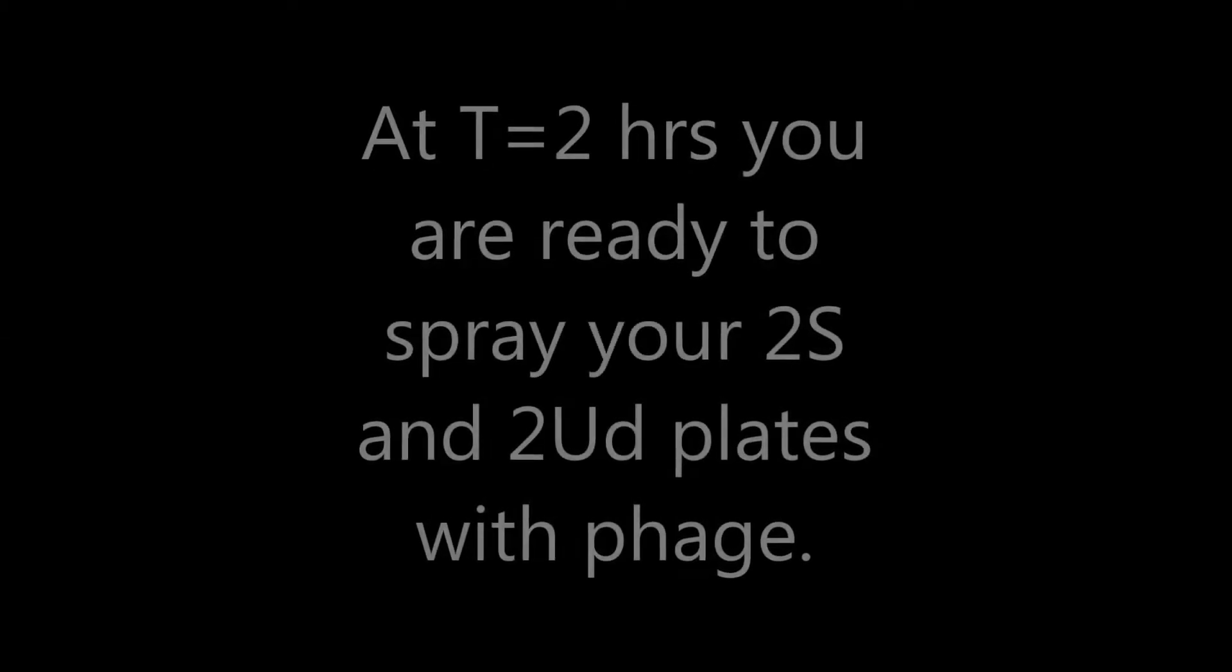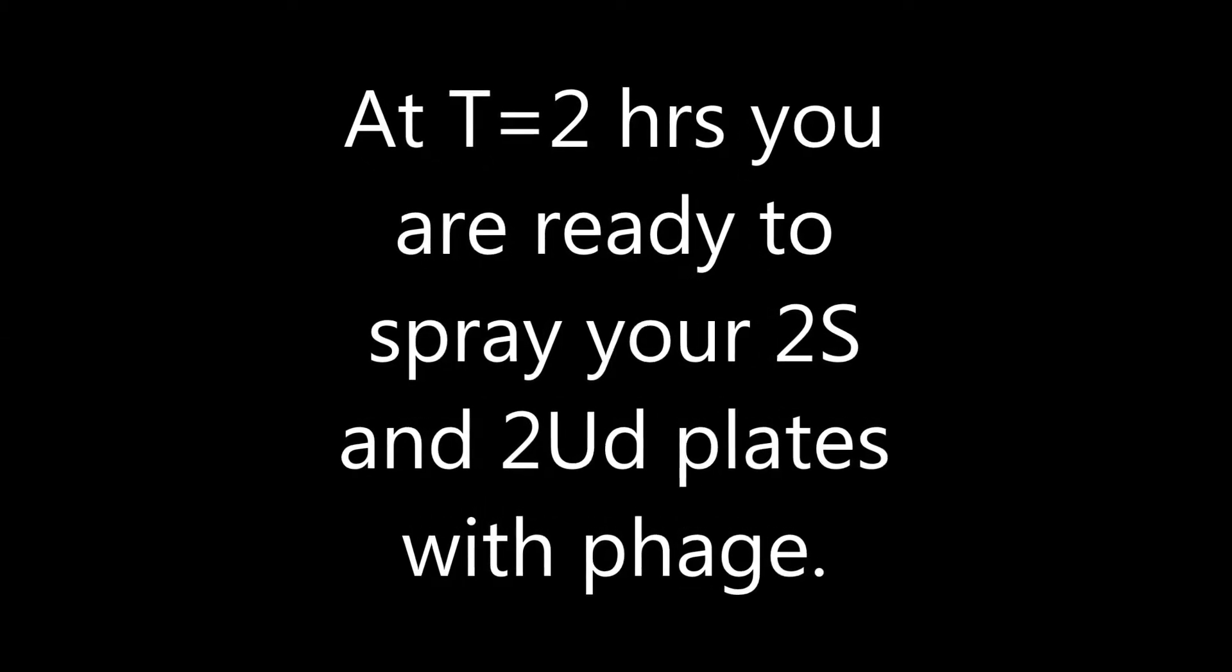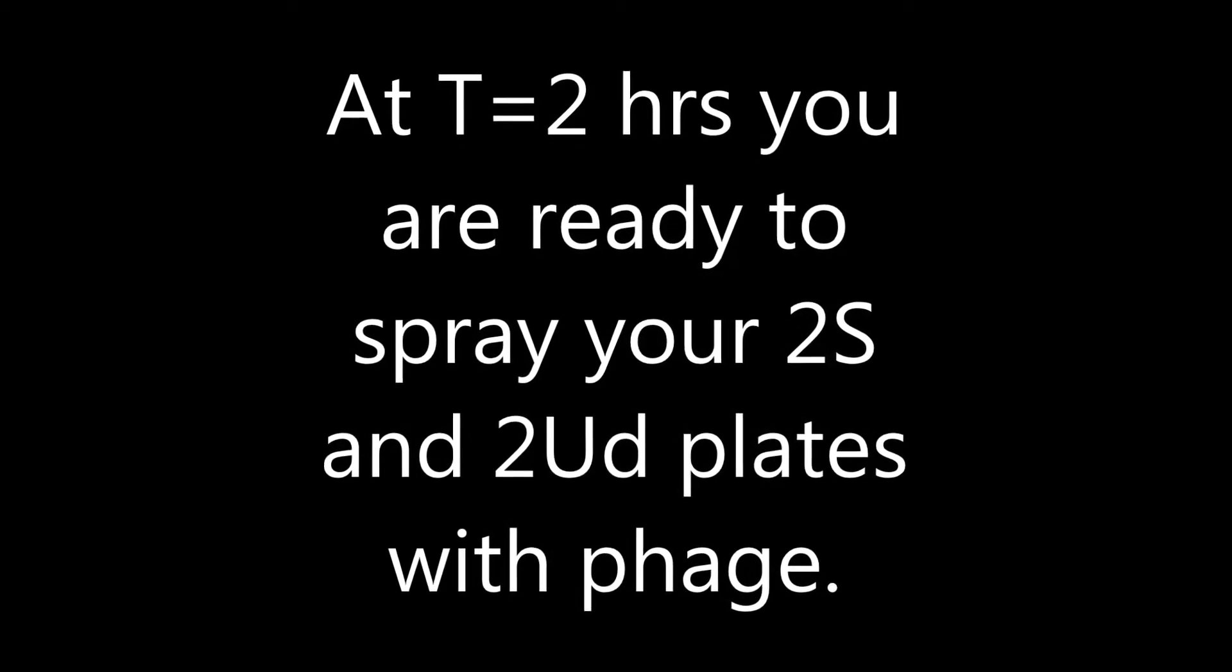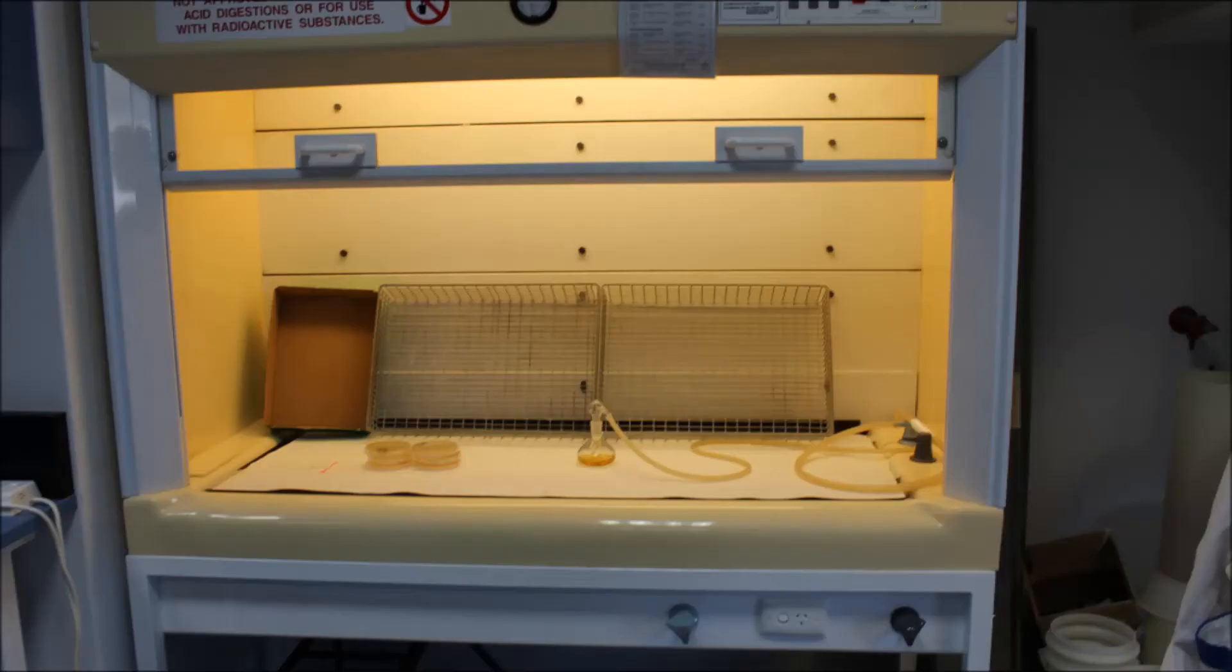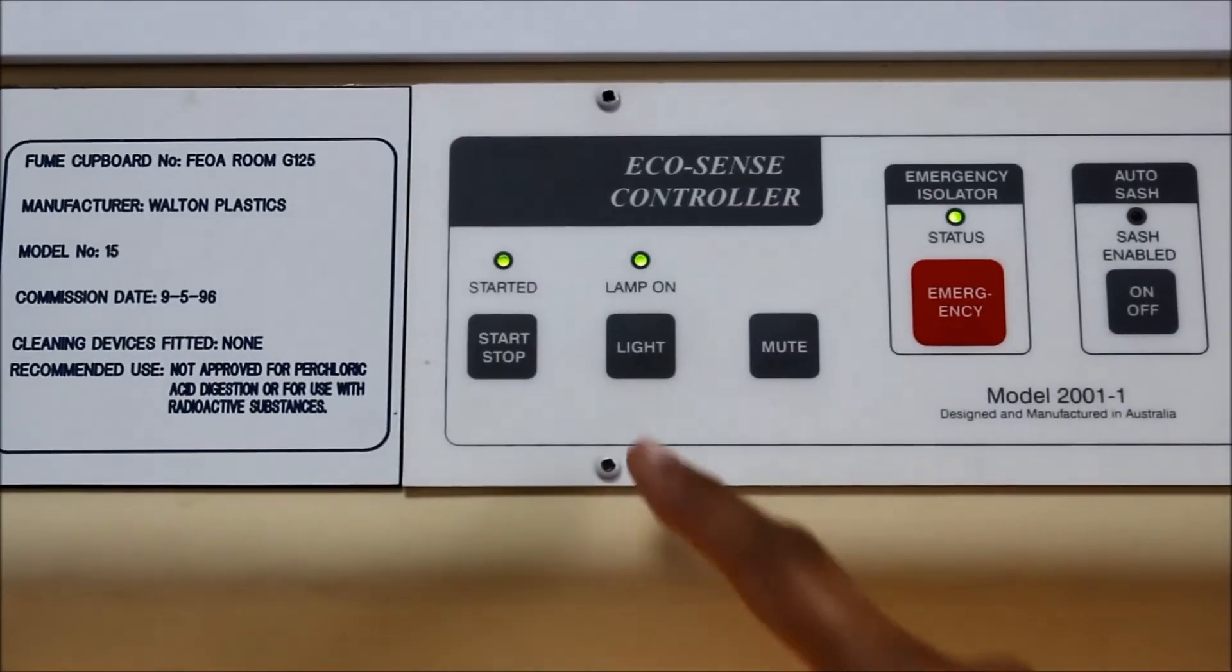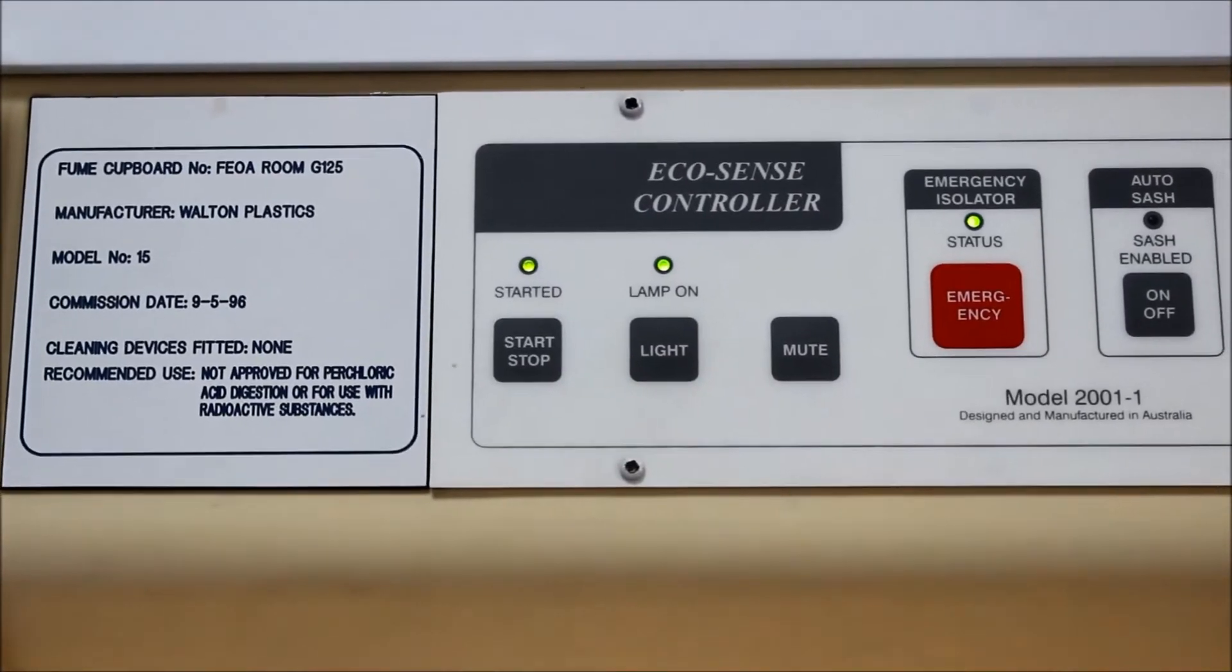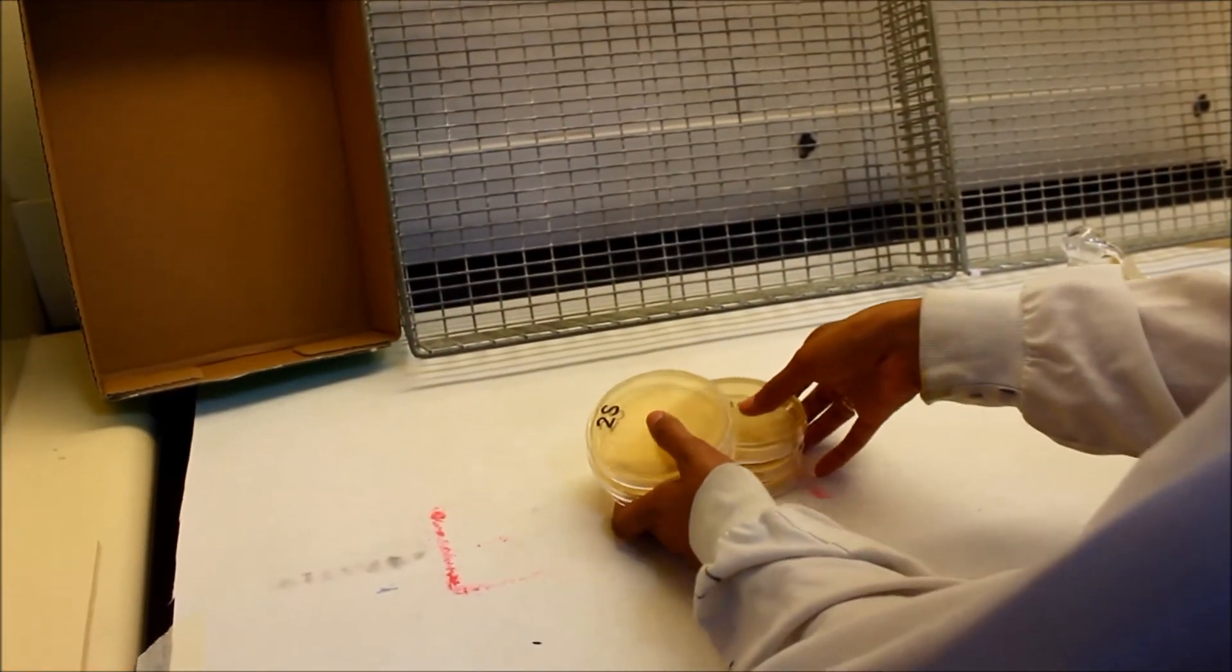At T equals 2 hours, you are ready to spray your 2S and 2UD plates with Farge. The Farge sprayer is located at the back of G22 in the fume hood. Ensure that the hood is switched on for the airflow before use.